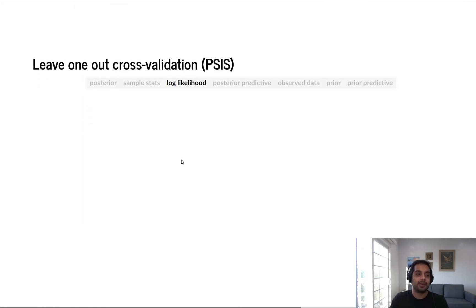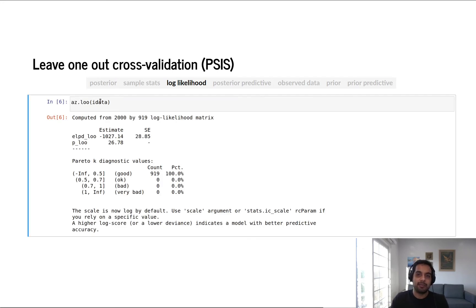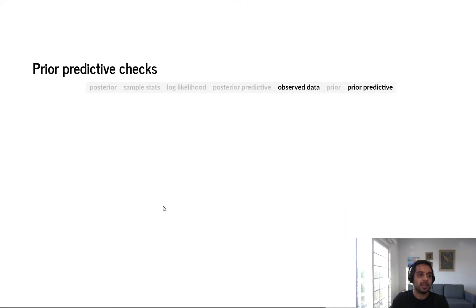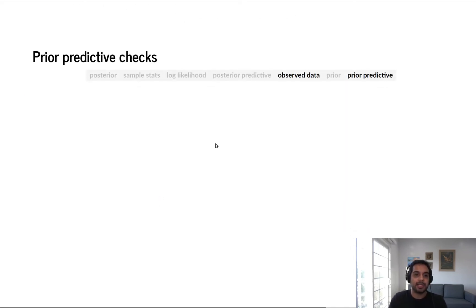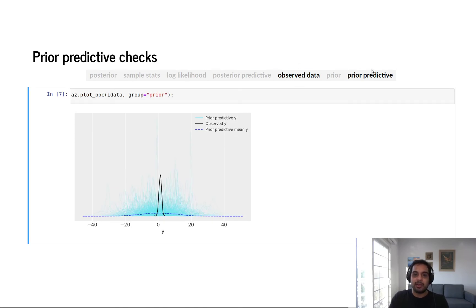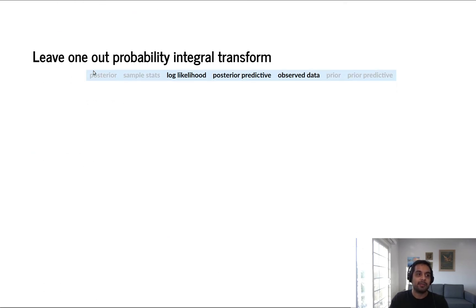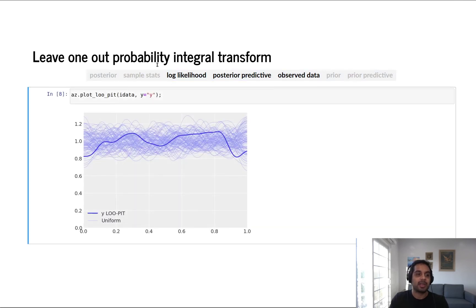If we want to do pure diagnostics, we just pass in an inference data object to ArviZ and we get the diagnostic. Another example is prior predictive checks. We have observed data and prior predictive samples — creating a prior predictive plot becomes fairly trivial. We have all of our prior predictive distributions as generated by the sampler, and then the kernel density estimate of the observed data. The most complicated example is the leave-one-out probability integral transform, where we use the log likelihood, posterior, and observed data — all three of those help us generate the plot.